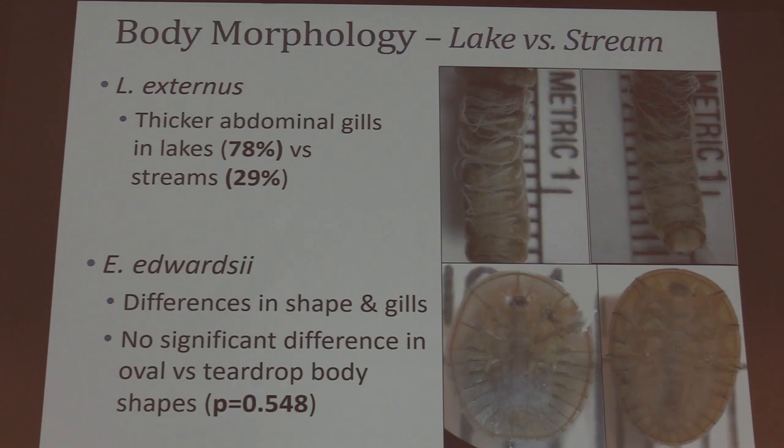For morphology, focusing first on Limnophilus externus: it's very difficult to measure caddisfly gills by sight alone. These are the gills on the abdomen of the caddisfly, and I noticed that lake individuals tended to have thicker abdominal gills — about 78% of them had what was considered thick gills, whereas the stream individuals had fewer with thick gills.